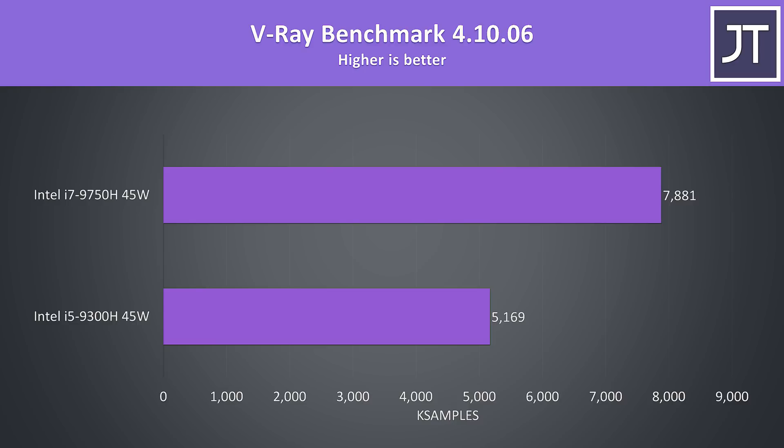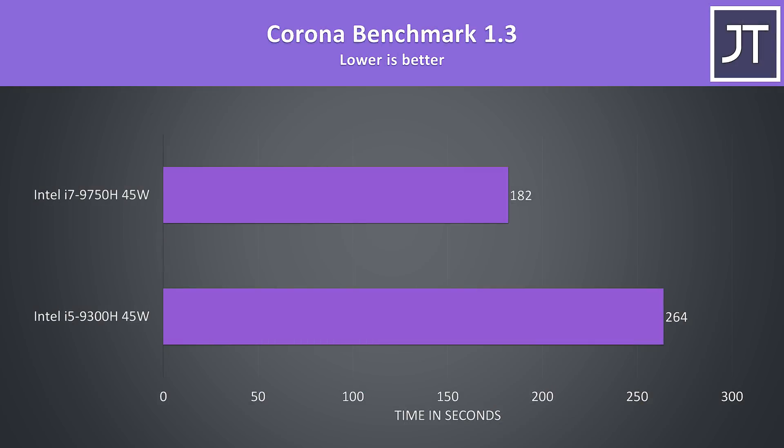The V-Ray benchmark uses the CPU to render out a scene, so yet another task that's typically faster the more cores you have. The i7 was 52% faster in this test, which makes sense given it's got 50% more cores and they're all being utilized. Another rendering benchmark also shows slightly less of a difference, but these rendering tests max out all cores, so the i7 was able to complete the task 45% faster than the i5.